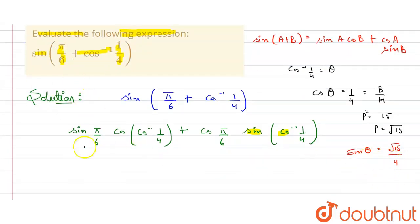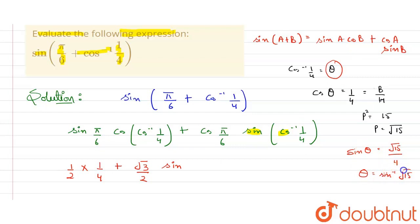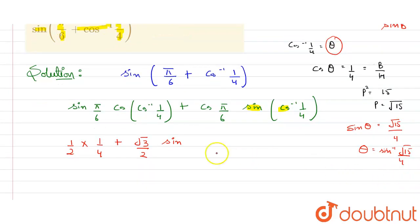Coming back to the main expression: sine(pi/6) = 1/2, and cos(cos⁻¹(1/4)) = 1/4. Then cos(pi/6) = √3 upon 2, and sine(cos⁻¹(1/4)) = sine of theta = sine inverse of √15 by 4.